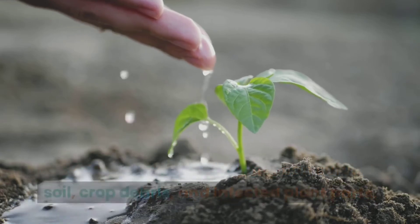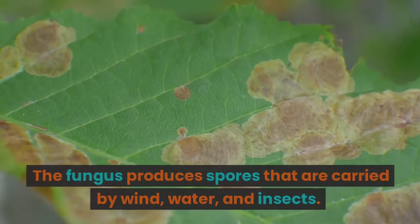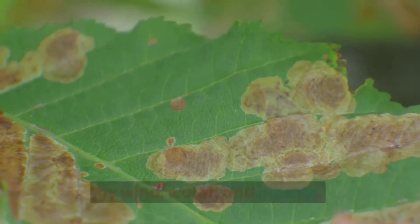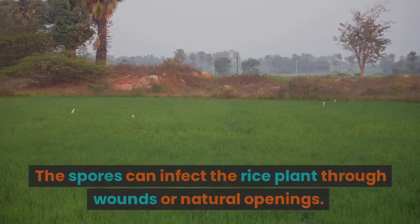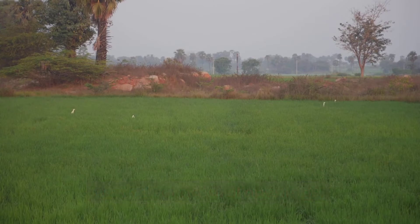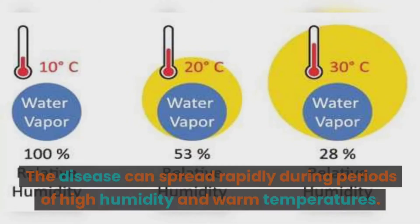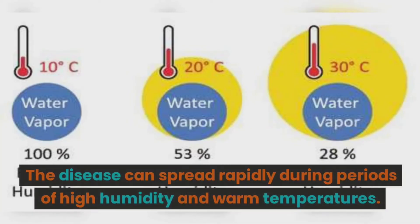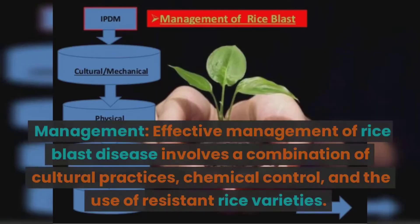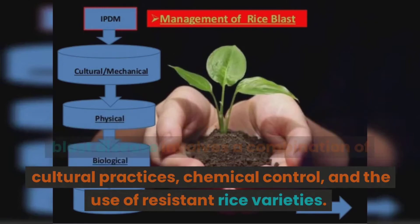The rice blast fungus can survive in soil, crop debris, and infected plant parts. The fungus produces spores that are carried by wind, water, and insects. The spores can infect the rice plant through wounds or natural openings. The disease can spread rapidly during periods of high humidity and warm temperatures.